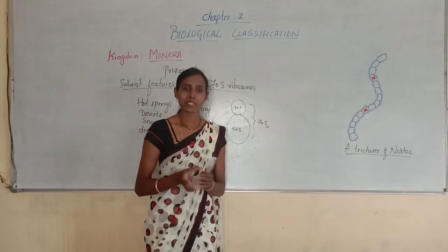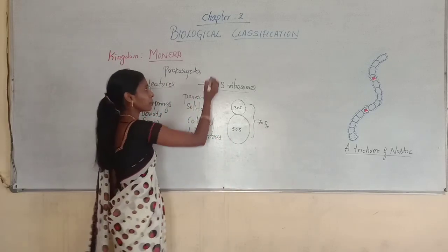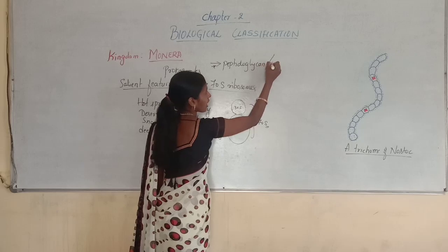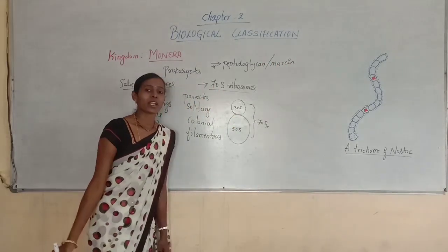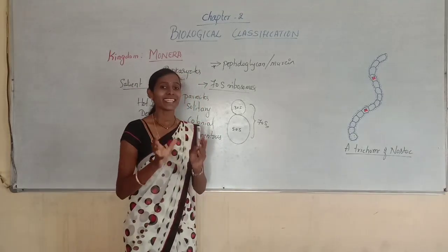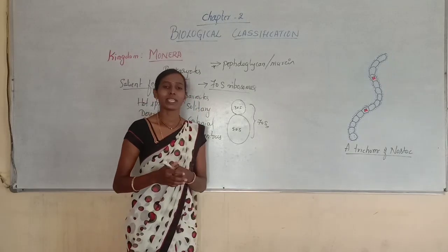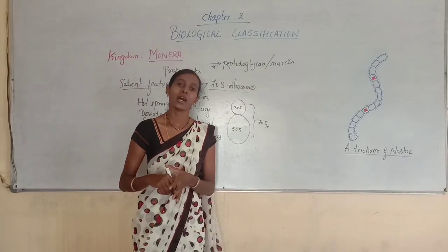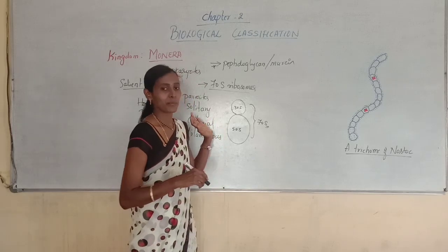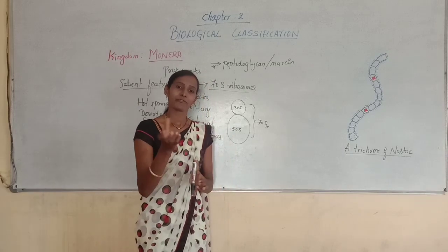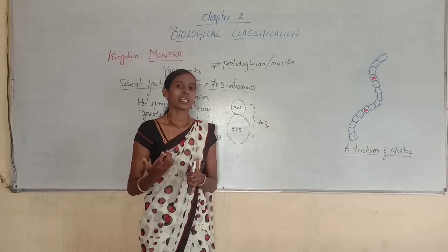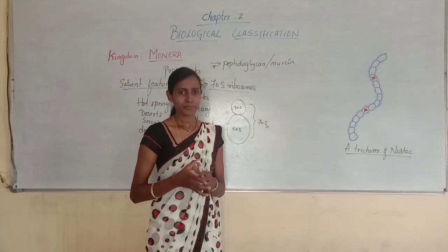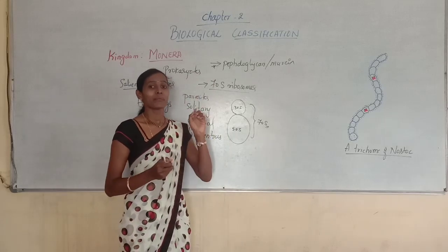Organisms in Kingdom Monera contain a cell wall made up of an important chemical component called peptidoglycans, also called murein. The organisms may be photosynthetic, utilizing sunlight, or chemosynthetic, obtaining nutrition from chemicals.